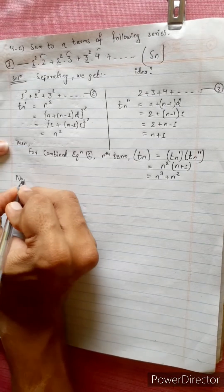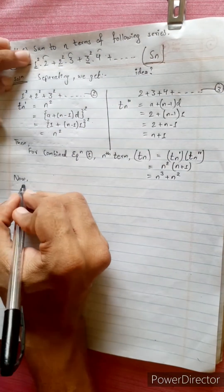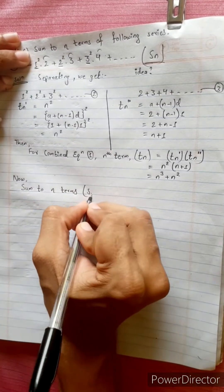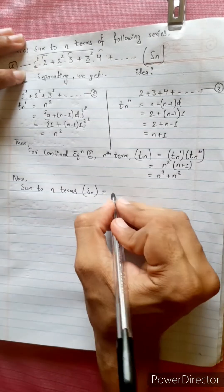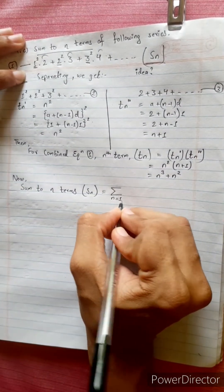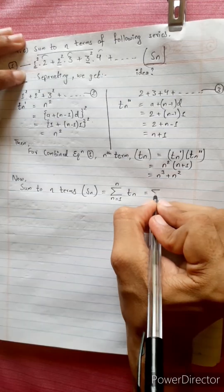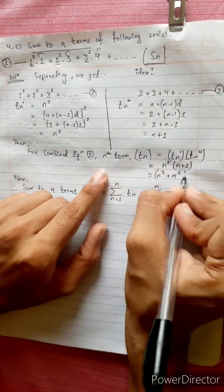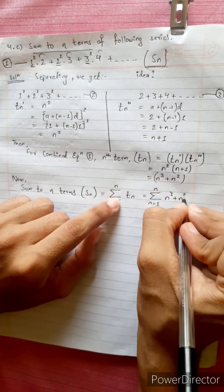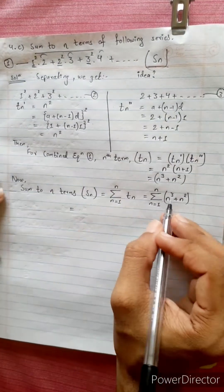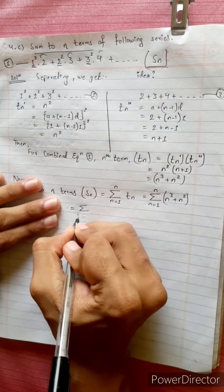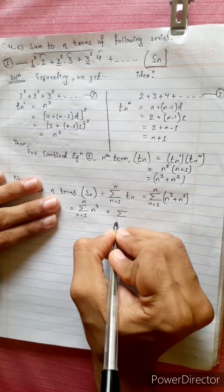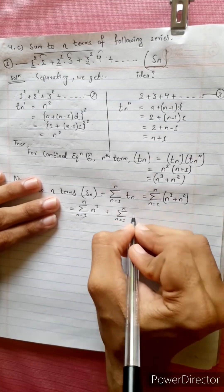Now we will show the sum to n terms, which is S_n, given by the formula: summation from n equals 1 up to n of t_n, equals summation from n equals 1 to n of n squared plus summation.